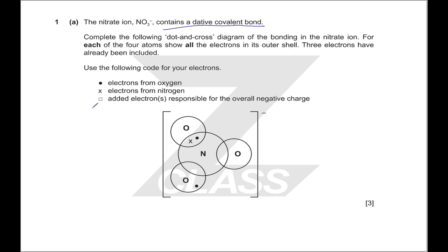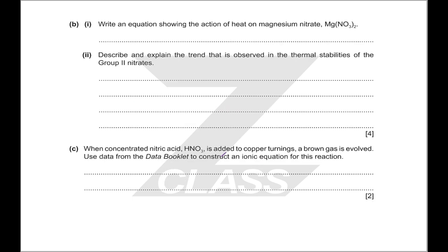Each oxygen should have six of its own electrons, nitrogen should have five of its own, et cetera. For 'write an equation showing the action of heat', that means we have thermal decomposition. We have an ionic compound acted on by heat — that's thermal decomposition — and it's an equation you essentially need to know. You get nitrogen dioxide and magnesium oxide as products.